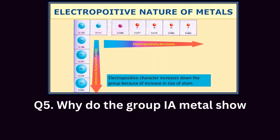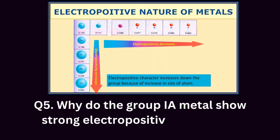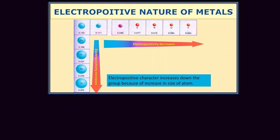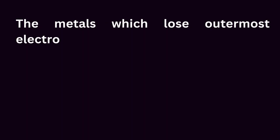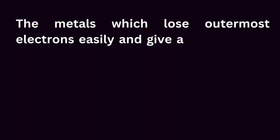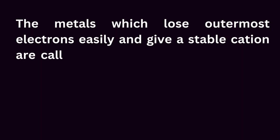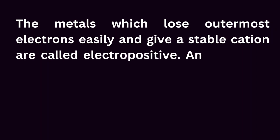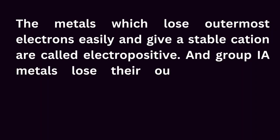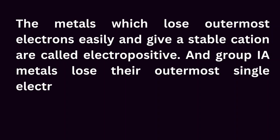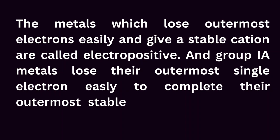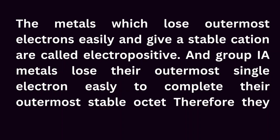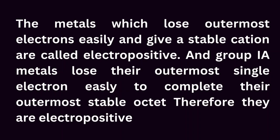Question 5: Why do group 1A metals show strong electropositive character? The metals which lose outermost electrons easily and give a stable cation are called electropositive. Group 1A metals lose their outermost single electron easily to complete their outermost stable octet. Therefore, they are electropositive metals.